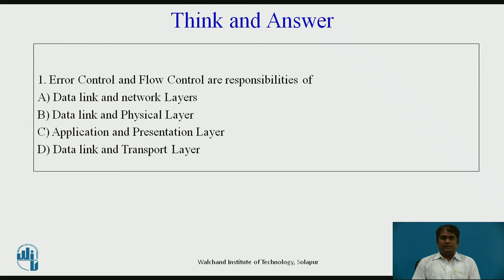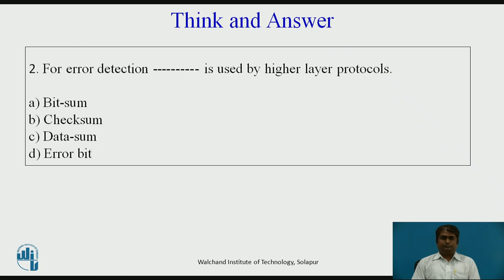Here, pause the video and give the correct answer. The answer is D. Error control and flow control differ in that flow control manages the flow of data until it reaches the client, while error control ensures that data is received at the receiver without error. The answer to the second question is B — checksum — because for error detection, the checksum includes bits used to find errors when data is received at the receiver side.